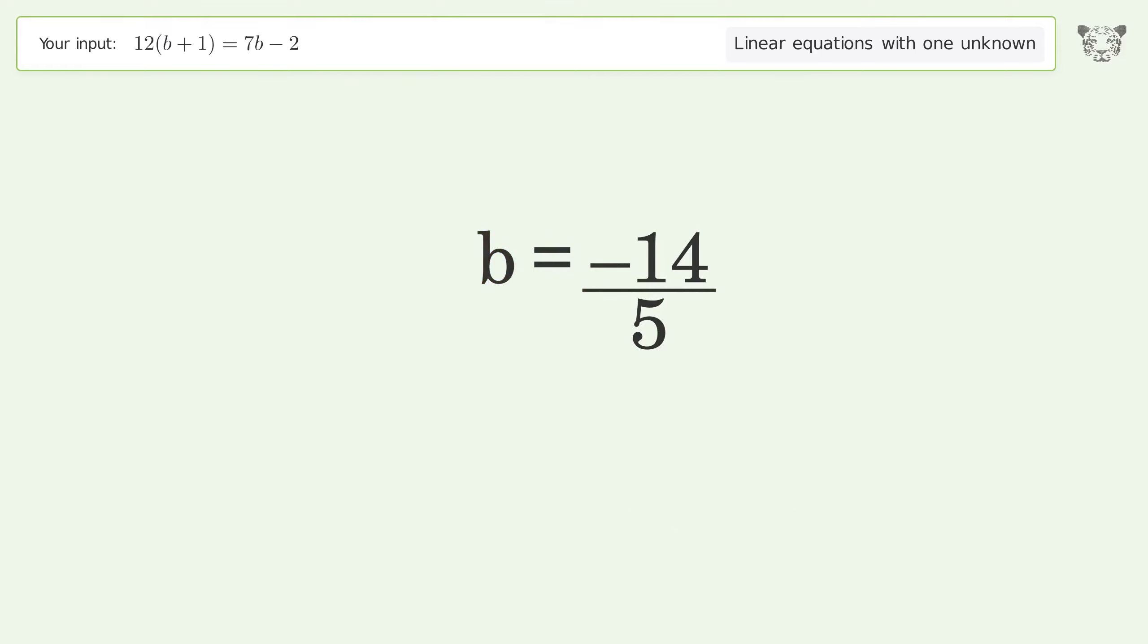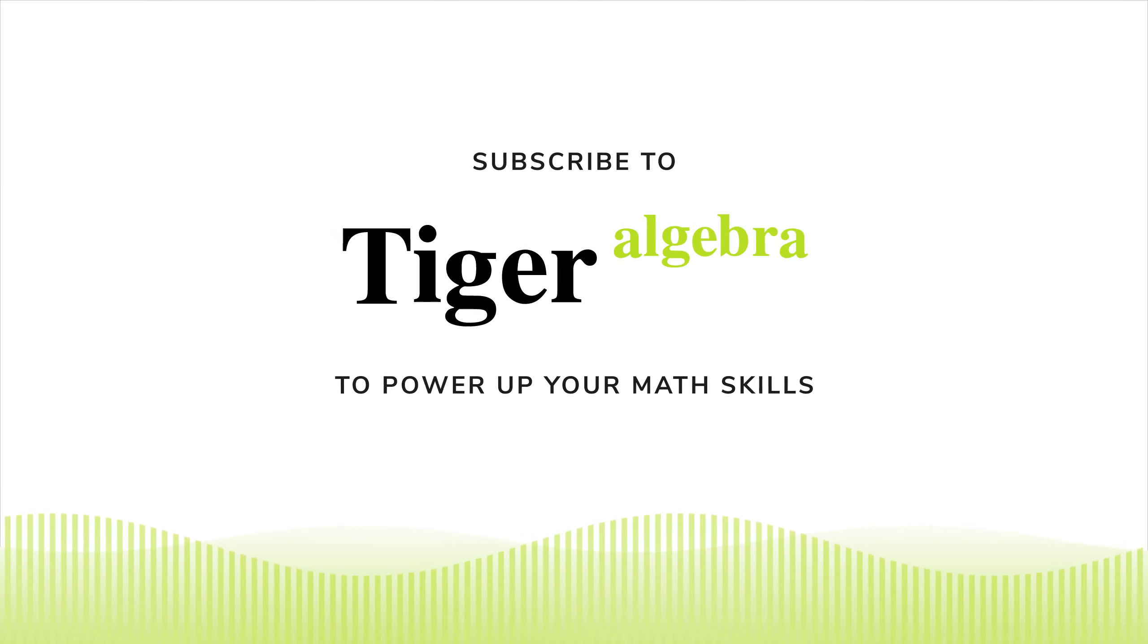And so the final result is b equals negative 14 over 5.